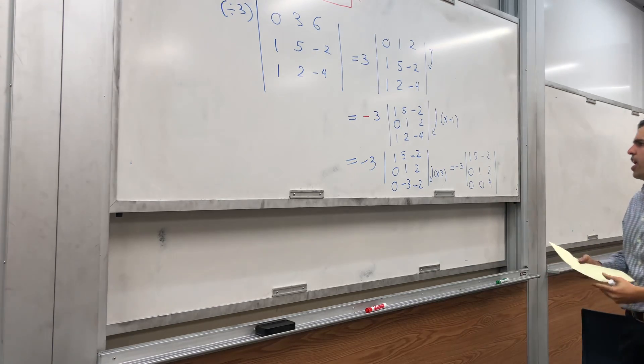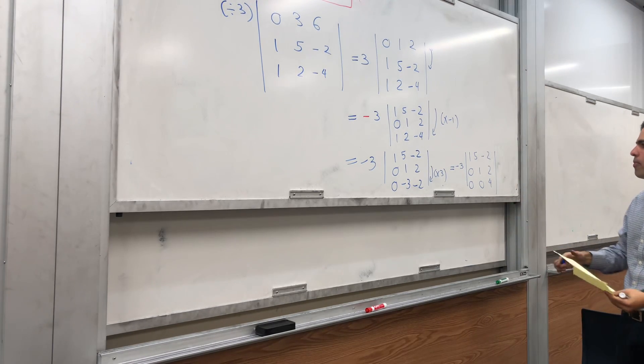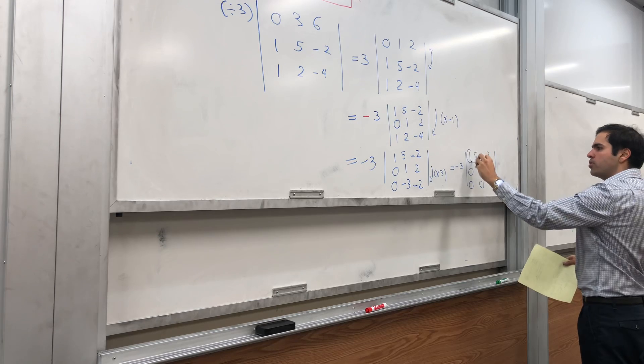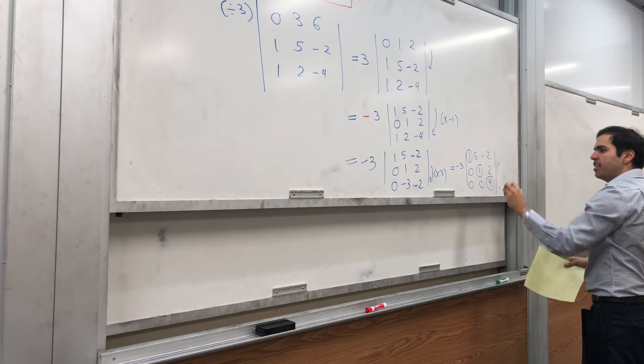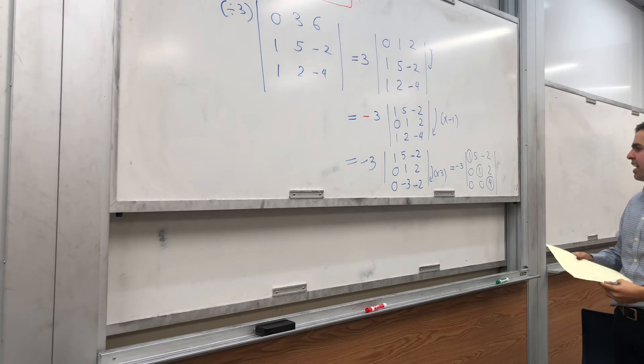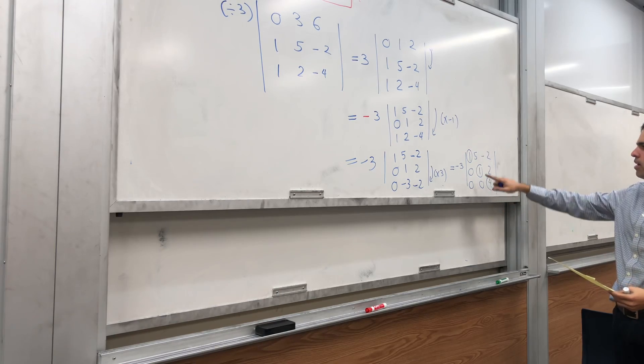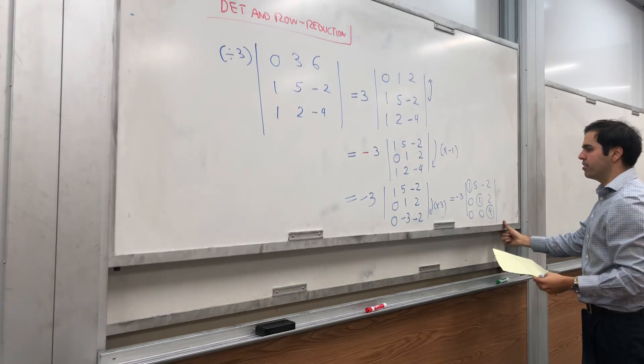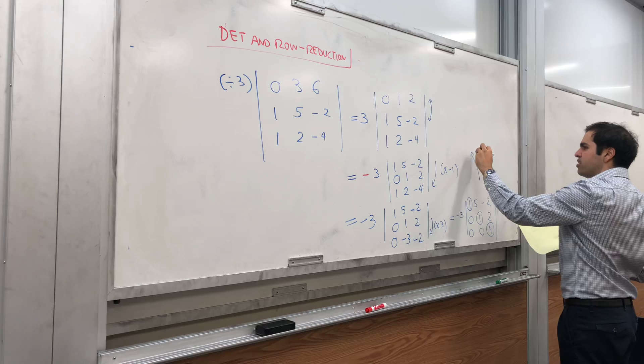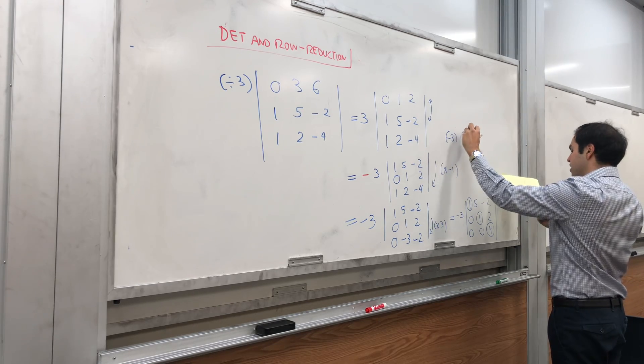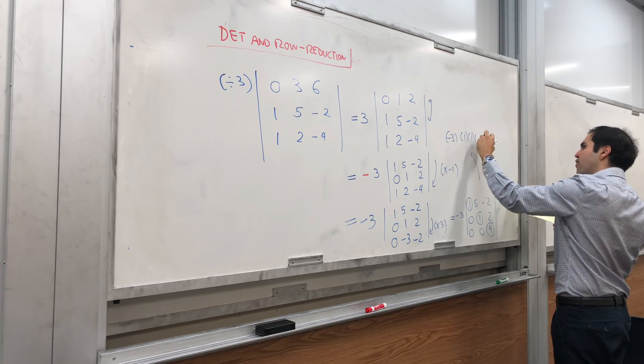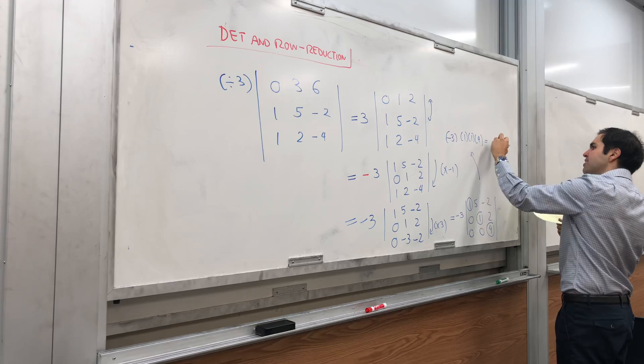Right, and now if you like you can do Bomberman, but notice it's an upper triangular matrix, and the determinant of an upper triangular matrix is simply the product of the entries on the diagonal. So the answer is -3 times 1 times 1 times 4, and that's -12.